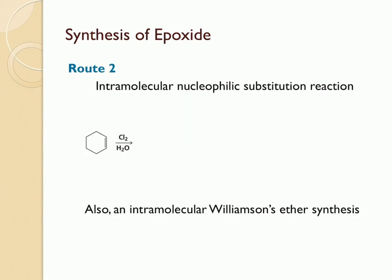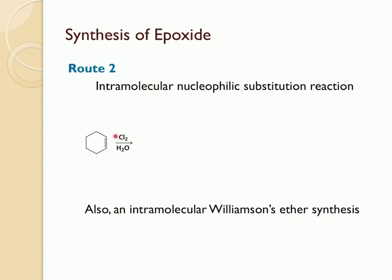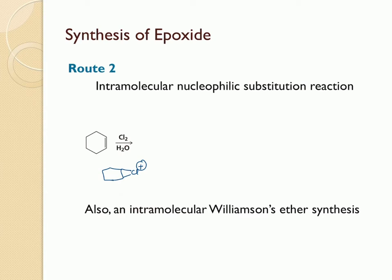Epoxides can also be synthesized using an intramolecular nucleophilic substitution reaction. This reaction is a very famous reaction — basically the electrophilic addition reaction for the formation of a halohydrin. In the first step, the alkene molecule reacts with chlorine to form a chloronium ion. In the next step, a nucleophilic substitution reaction happens with water as the nucleophile, which attacks on the side opposite to the chloronium ion, breaking open the ring so that the two bonds are in the anti-direction.